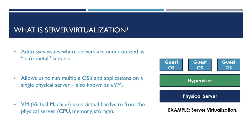Virtualization allows us to run multiple operating systems and applications on a single server. These are known as VMs or virtual machines. As you can see in the example on the screen, we have our physical server as before, however on top of this we can install what's known as a hypervisor. A hypervisor is a piece of server virtualization software that runs on top of the physical server and makes it possible for us to run multiple virtual machines. The hypervisor will provide the VMs allocated resources like CPU, memory, and storage.